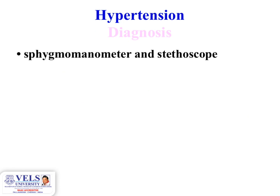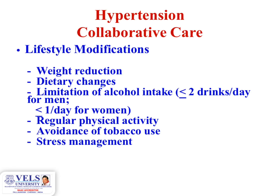For diagnosis, a sphygmomanometer and stethoscope are used to measure blood pressure. Treatment goals include hypertension collaborative care through lifestyle modifications: weight reduction, dietary changes, limitation of alcohol intake, regular physical activity, avoidance of tobacco use, and stress management.